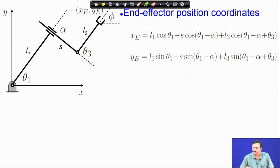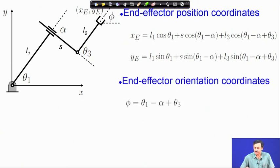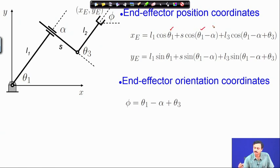Here are the forward kinematics relations written out: x_e and y_e expressions and finally the end effector orientational coordinate phi. This is the forward kinematics problem: given theta_1, s, and theta_3, I am able to find out x_e, y_e, and phi.